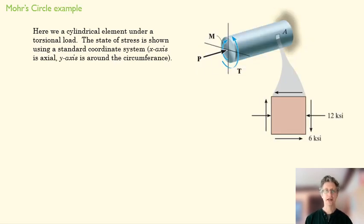Let's do a real quick example here. We have a cylindrical element under a torsional load, twisting it, attached to a surface here, to a support.